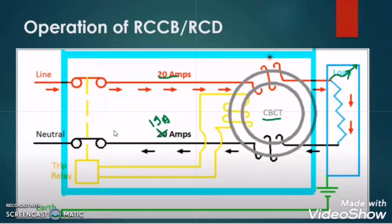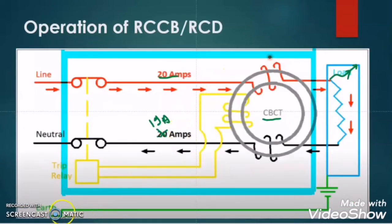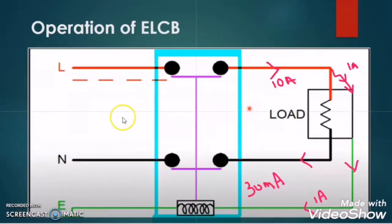One very important point to observe: in the case of ELCB, the earth conductor plays a vital role in tripping. The leakage current flows through the earth conductor and activates the tripping coil of the ELCB. But in the case of RCCB, there is no role of the earth conductor. Even if there is no earth conductor, the RCCB will still trip.